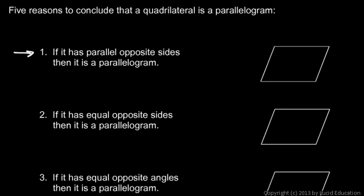The first statement: if it has parallel opposite sides, then it is a parallelogram. Let's mark the diagram accordingly. The standard markings are a little triangle on each of those sides pointing the same way, showing that that side is parallel to that one. Then some different triangular markings on the other pair of parallel opposite sides, indicating that that side is parallel to that one.